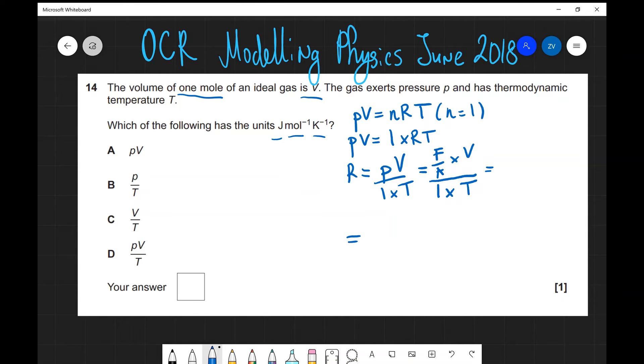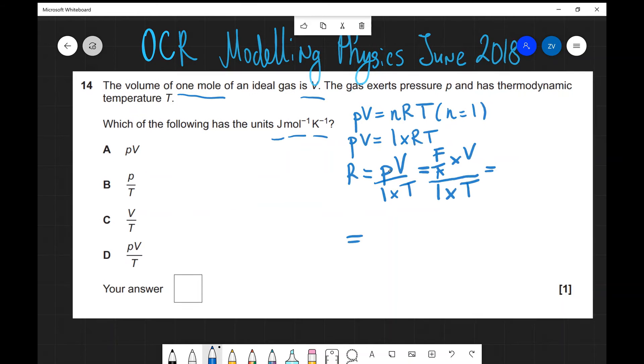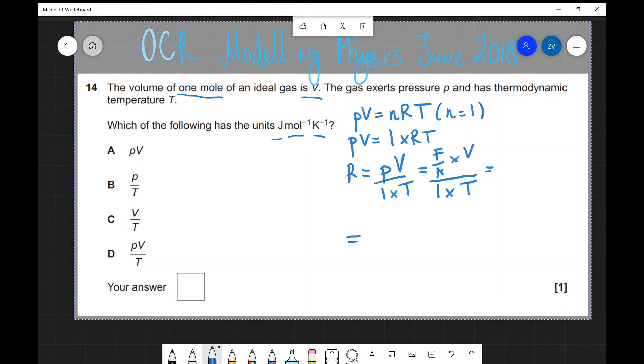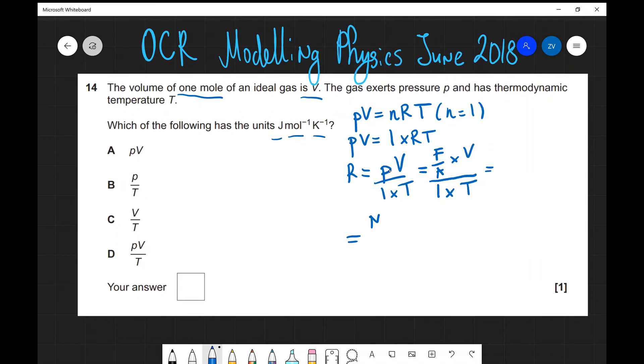We can start adding some base units now. The force is measured in newtons. My area is measured in meters squared multiplied by the volume, which is meters cubed. This one here is the amount of substance, so it's a mole. And T stands for temperature, which is measured in Kelvin.